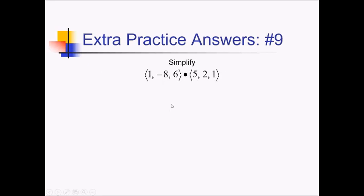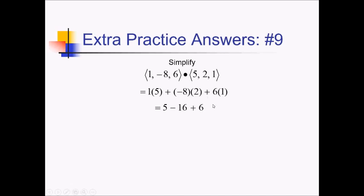To find the dot product of these two three-dimensional vectors, I have to get the products of the x's, the y's, and the z's, and add all those products together. So we've got 1 times 5, plus negative 8 times 2, plus 6 times 1. That's 5 minus 16 plus 6, which is essentially 11 minus 16, or negative 5.